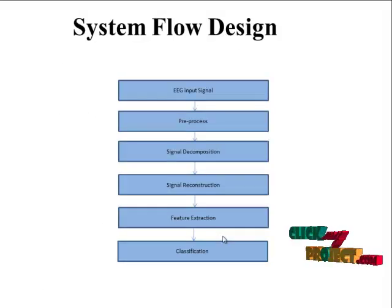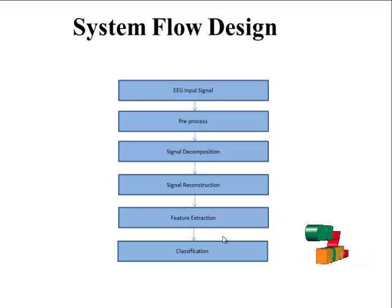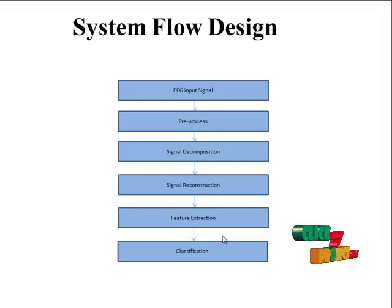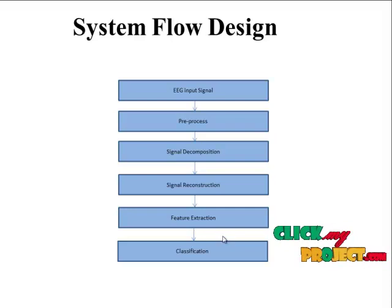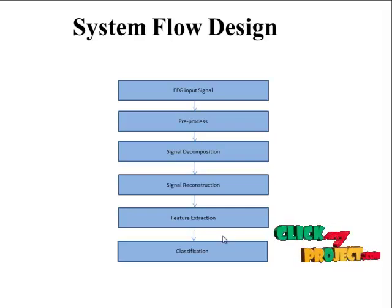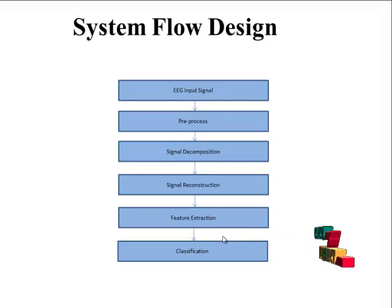This is the flow design which describes our proposed enhancement system. Initially, the EEG dataset is taken as input and applied to the process. The given EEG signal is first processed — this is called preprocessing. In preprocessing, decomposition is performed: noises are removed and then signal decomposition is carried out.